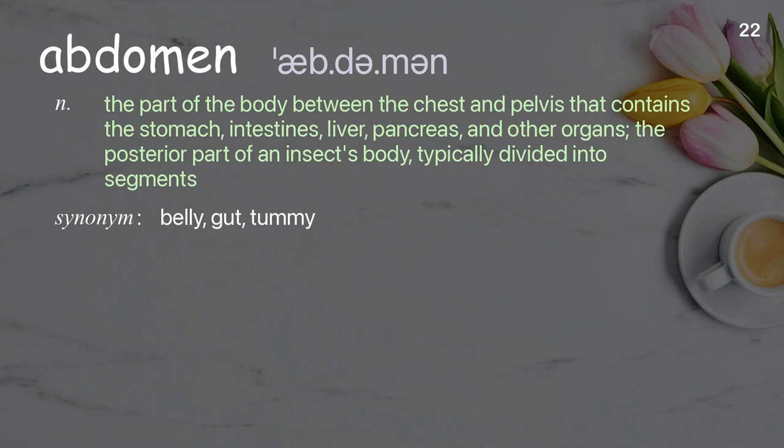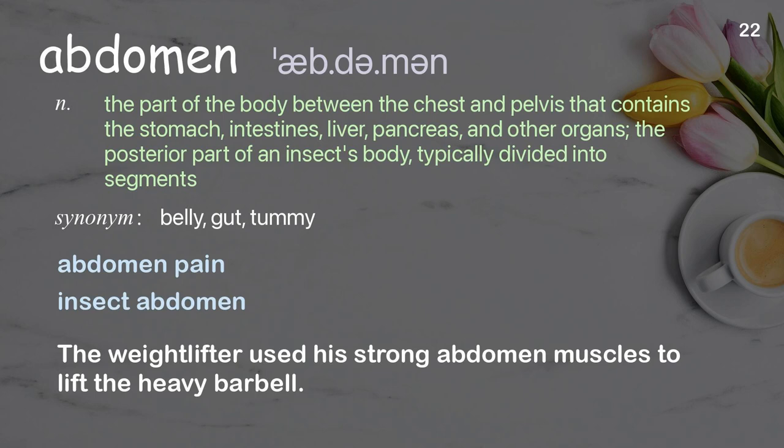Abdomen. The part of the body between the chest and pelvis that contains the stomach, intestines, liver, pancreas, and other organs; the posterior part of an insect's body, typically divided into segments. Examples: abdomen pain, insect abdomen. The weightlifter used his strong abdomen muscles to lift the heavy barbell.